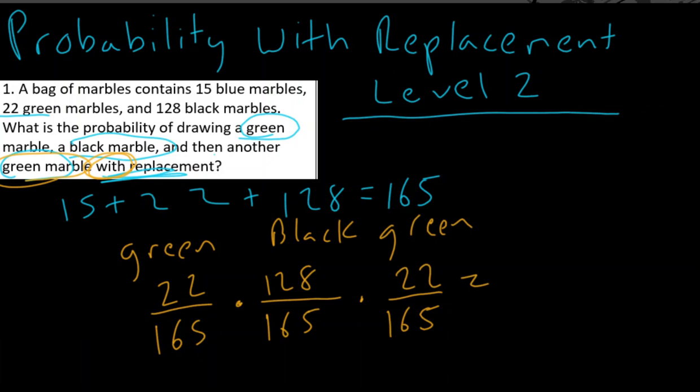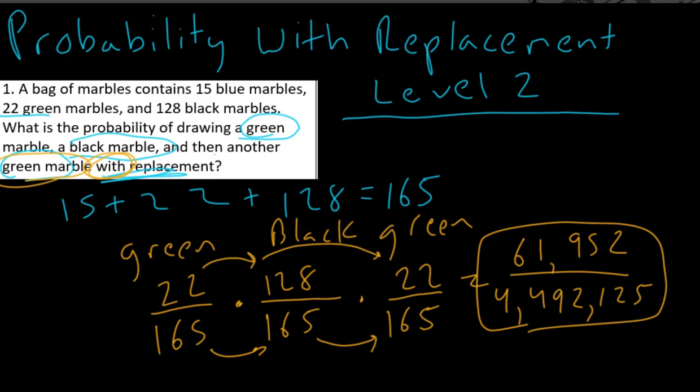Now y'all, this is going to be a pretty wild number. When I did, remember you do top times top times top, and when you do 22 times 128 times 22, you're going to get 61,952. And when you do 165, remember bottom times bottom times bottom, 165 times 165 times 165, you're going to get 4,492,125. Now you can probably tell, hey, the odds of this happening are not super large, however,